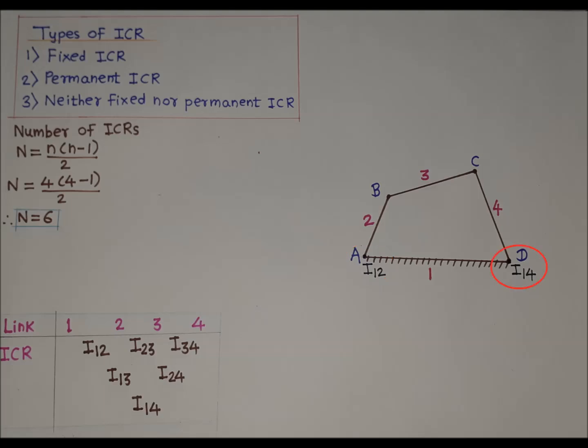Between link number one and link number four there is a turning pair at point D, hence ICR i14 will be at the turning pair between link one and four. When this mechanism operates, links will change their position, but the fixed link will not move. The position of points B and C will change, but the position of points A and D will not change. Hence ICR i12 and ICR i14 will never change their position when the mechanism operates.